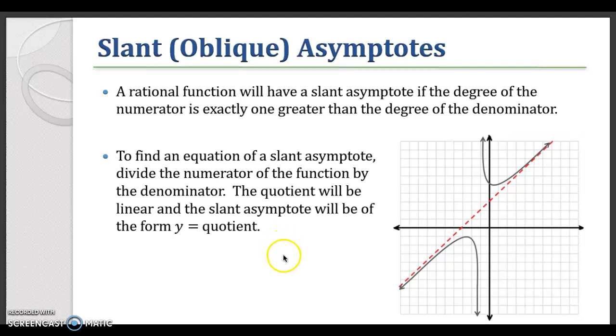For rational functions we have a numerator and a denominator, right? So a rational function will have a slant asymptote if the degree of the numerator is exactly one greater than the degree of the denominator.